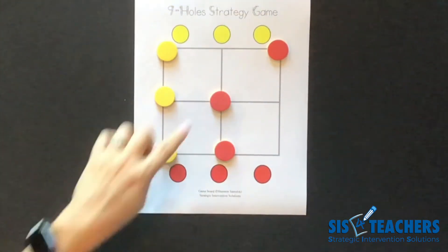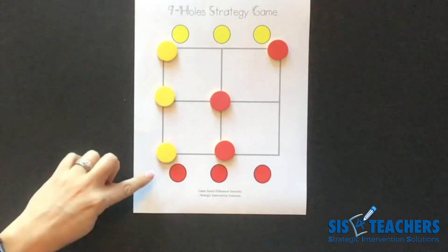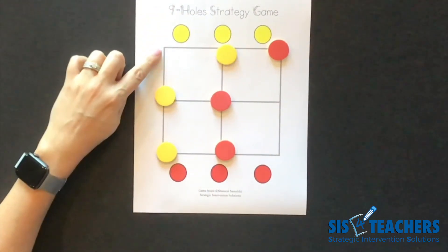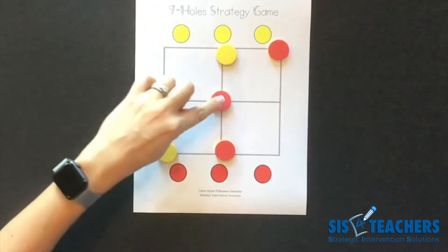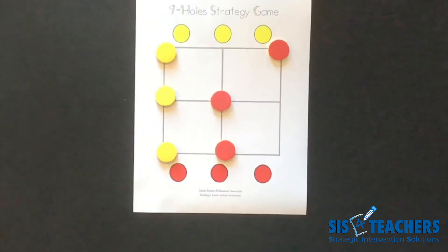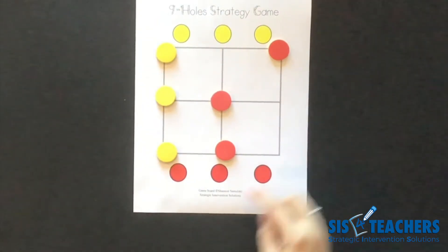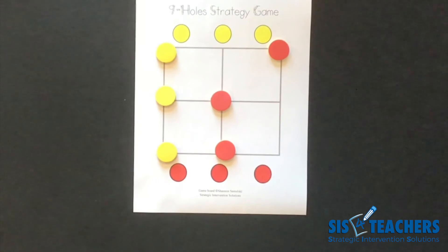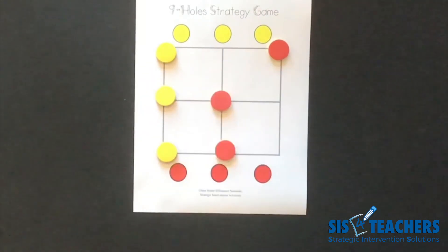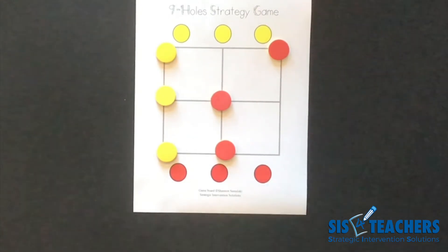My partner just won. She came in with a slide across the side. There was no real way for me to prevent this because I couldn't get a counter to go diagonally. This game is really fun to play. Using the line segment rule definitely adds a different layer of complexity for students because they have to be strategic about how they're placing their counters on the board before they start to play.